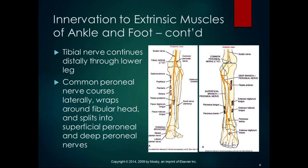The tibial nerve, after it passes the knee, continues distally through the lower leg and innervates a lot of the superficial posterior group. The common peroneal nerve courses laterally, wraps around the fibular head, and splits into the superficial peroneal and deep peroneal nerves, which innervate most of the lateral and anterior muscles.